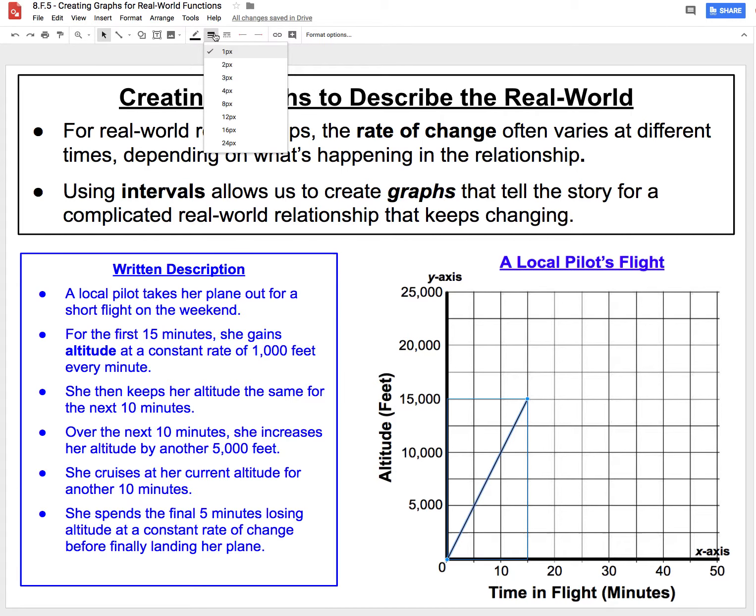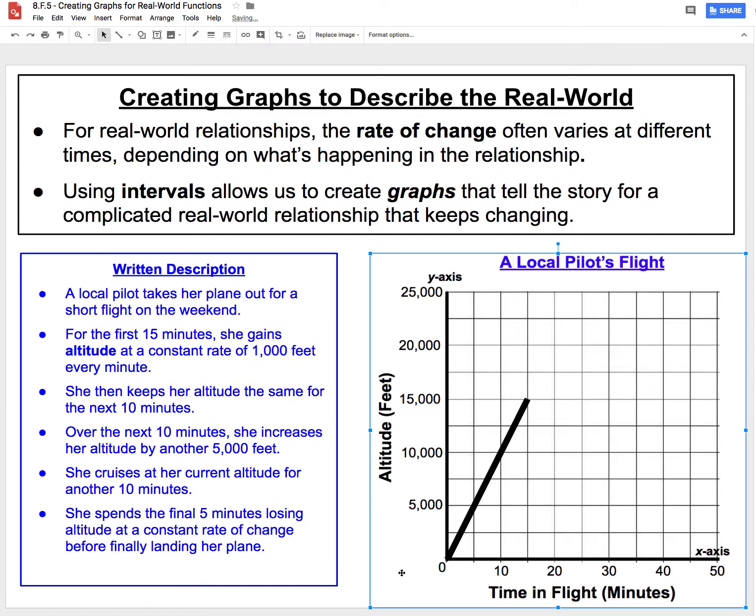So by inserting this line here, and going up to our tool, increasing the width of that line a little bit, this black stretch right here represents the first and second bullet point. She starts on the ground at 0 minutes, takes the plane out, and gains 1,000 feet for the first 15 minutes.